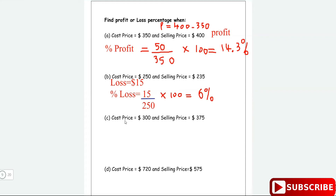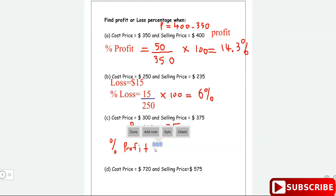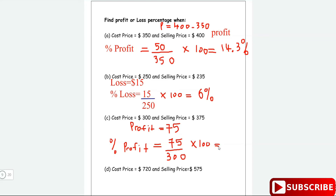For example c, the profit is the selling price minus the cost price, which is 75. The percentage profit is equal to the profit of 75 divided by the cost price of 300, multiplied by 100. So 75 divided by 300 multiplied by 100 gives us 25 percent. That's a 25 percent profit — a big amount.